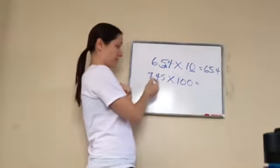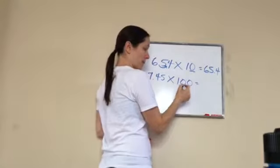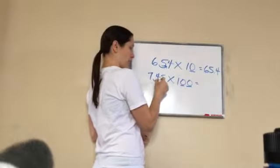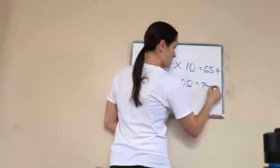Okay, that would be 745. Right. Why? Because it moved twice. 1, 2. Two zeros. You don't even have to put the decimal at the end. 745.